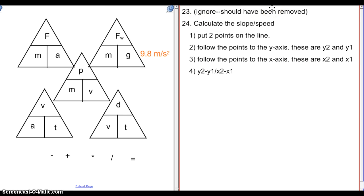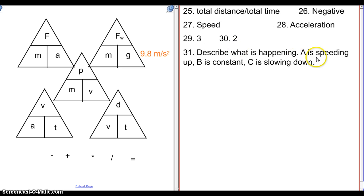Number 23, go ahead and ignore. It actually should have been removed from your review. It's not something we went over. For number 24, you're going to need to calculate the slope of the line, which you should know how to do from algebra, but just as kind of a refresher. You're going to put two points on that line. I'd recommend places where the line crosses a corner. You will follow from where the points are over to the y-axis to find your numbers for y2 and y1. Then you'll do the same thing with the x-axis. Find x2 and x1. Your formula is y2 minus y1, then divide it by x2 minus x1. To find average speed, it's just total distance divided by total time. If something is slowing down in the positive direction, it has negative acceleration. Slope on a position versus time graph is equal to speed. On a speed versus time graph, slope is equal to acceleration. Then for this one, point 3 was the one you were looking for, and then point 2 was the one you were looking for for there.